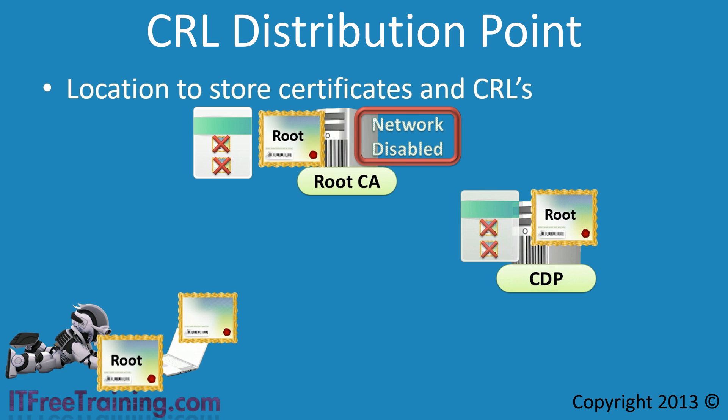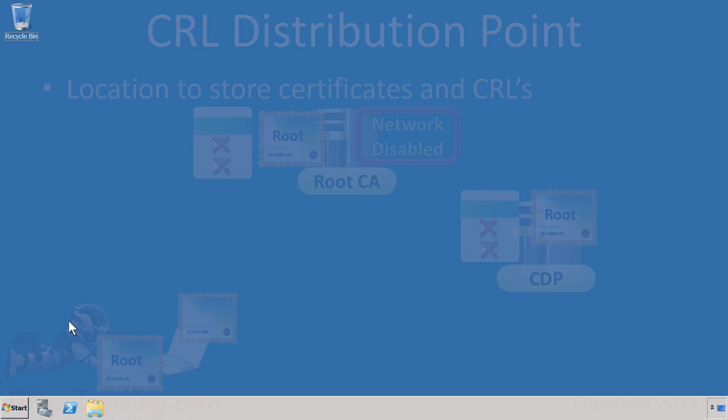You may be wondering how the client knows where to look for these certificates and the certificate revocation list. The answer is that each certificate has this information embedded in it, so the client knows where to look in order to verify that a certificate is valid. Information like the HTTP address of the web server or the LDAP location in Active Directory is stored there. All this information is configured before the certificate is issued so the client can access it to obtain any required certificates and the CRL.